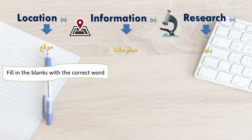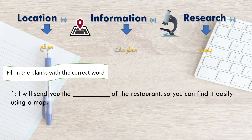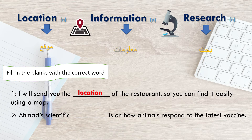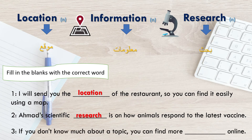Let's fill in the blanks with the correct word. Number 1: I will send you the ___ of the restaurant so you can find it easily using a map. Answer: location. Number 2: Ahmed's scientific ___ is on how animals respond to the latest vaccine. Answer: research. Number 3: If you don't know much about a topic, you can find more ___ online. Answer: information.